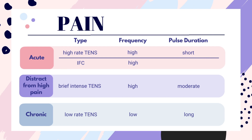Distracting from high pain is going to be brief intense TENS. Still a high frequency, but a moderate pulse duration, so like 150 to 250 is where we're aiming for the pulse duration. To distract from high pain, the amplitude will be at the highest tolerable intensity.